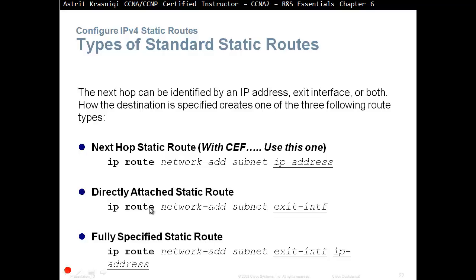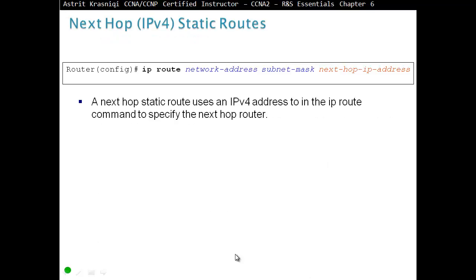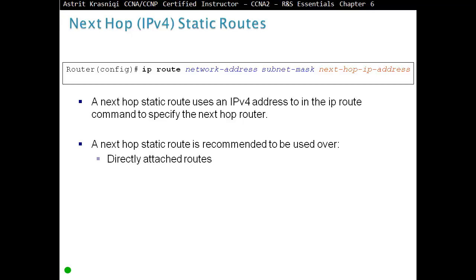For example, in the exam or questionnaire, when they ask you to create a directly attached static route, what they want you to do is actually type a static route with your exit interface. Or they could say create a next hop static route, which means create a static route with a neighbor's IP address at the end. Or it could be fully specified — exit interface and the neighbor's IP address. A next hop static route uses an IP address in the ip route command to specify the next hop router, and is recommended over directly attached and fully specified static routes.